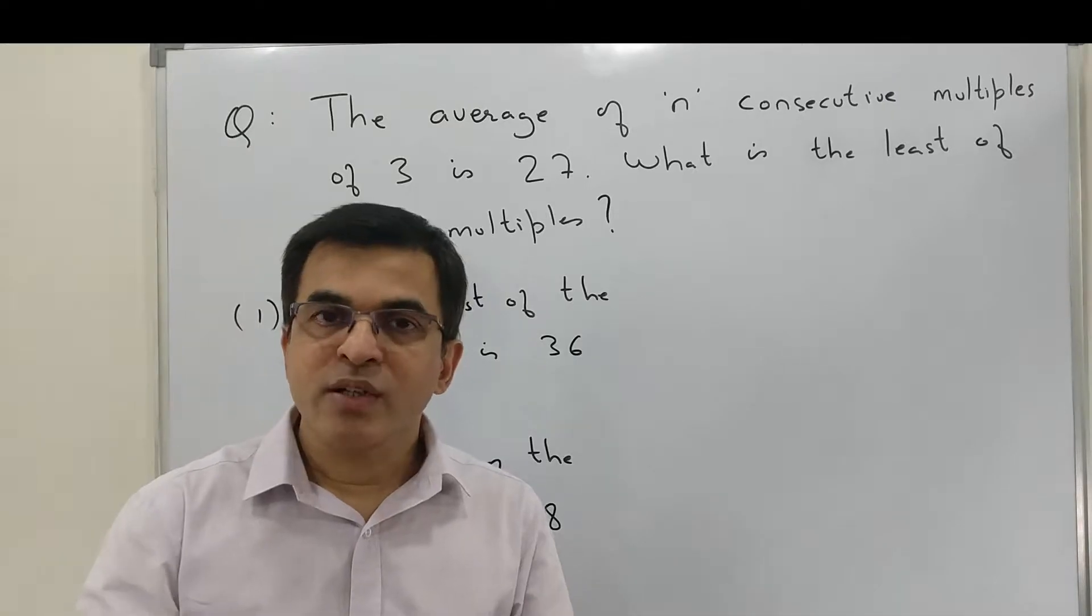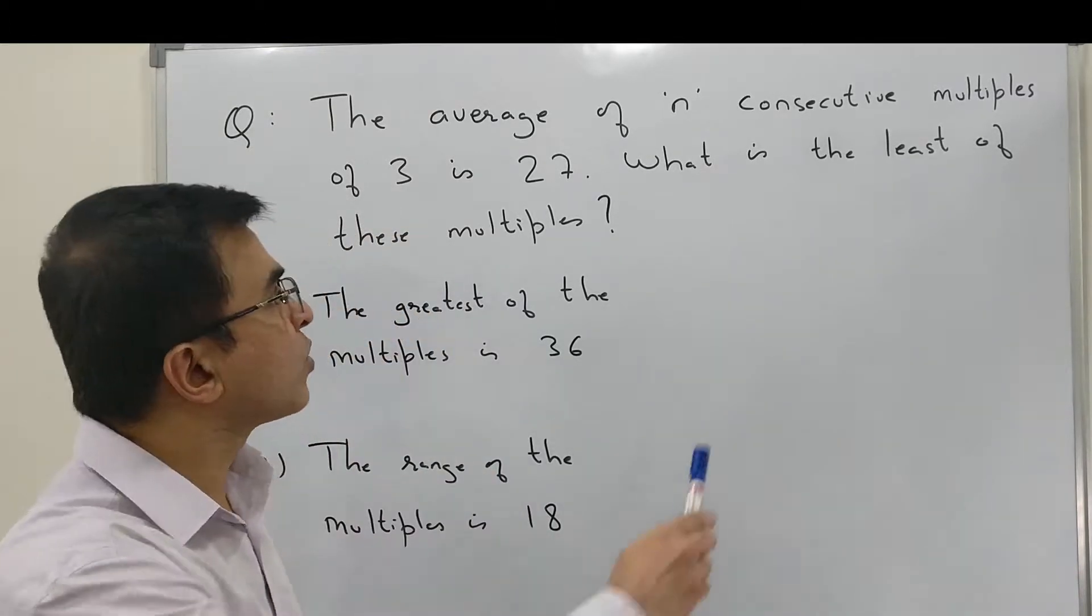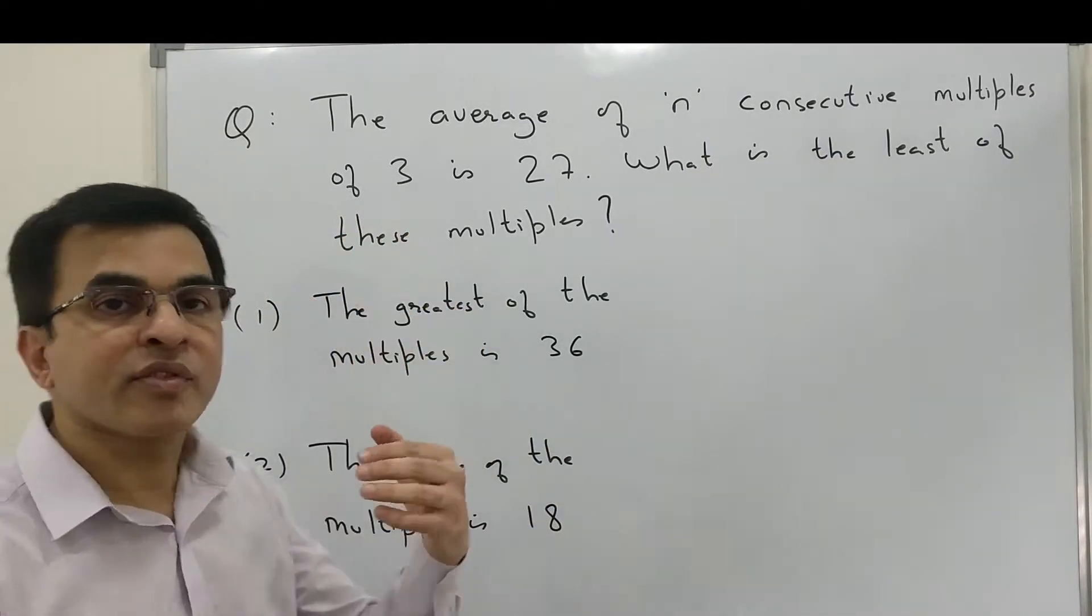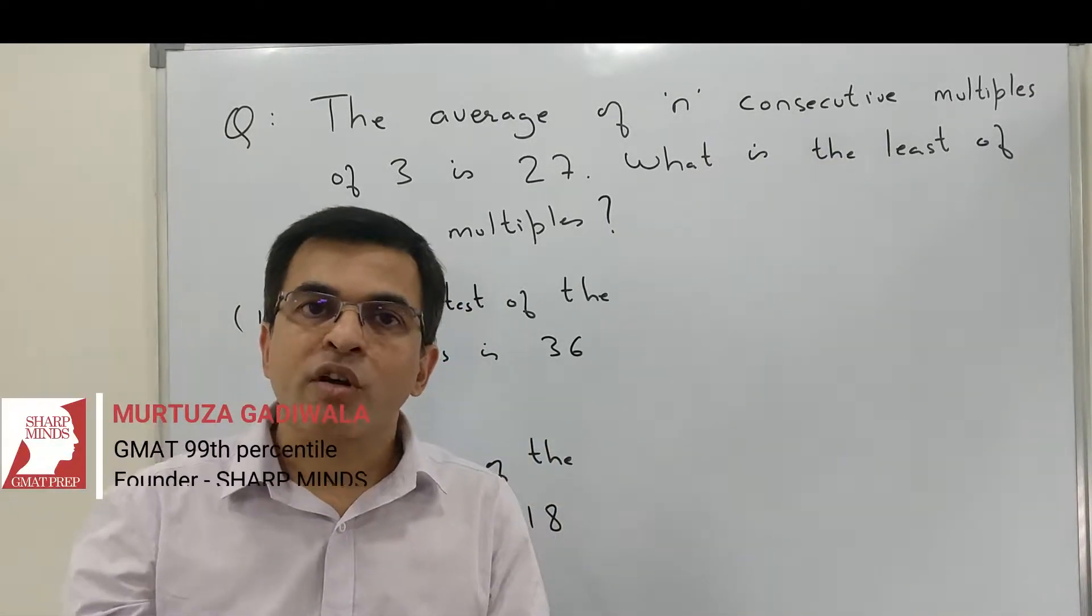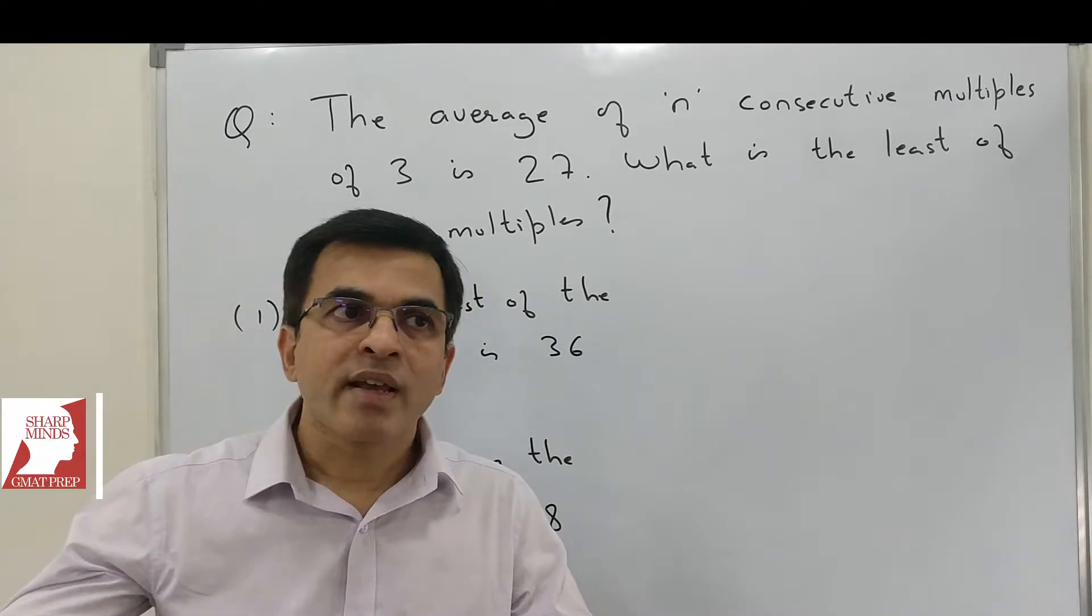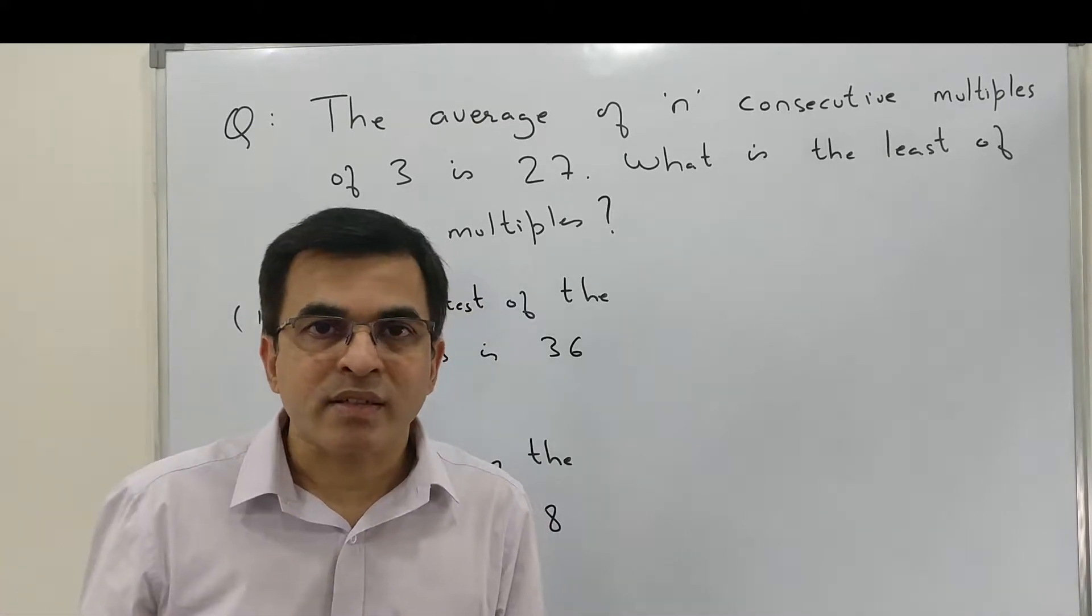When we see a question like this, there are some clues we cannot afford to miss. One of them is out here - we are talking of n consecutive multiples of 3. The moment we talk of consecutive multiples of 3, we are looking at a sequence wherein each subsequent term is 3 more than the next, and this kind of sequence is an arithmetic progression.